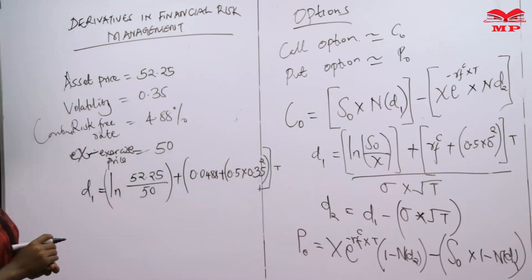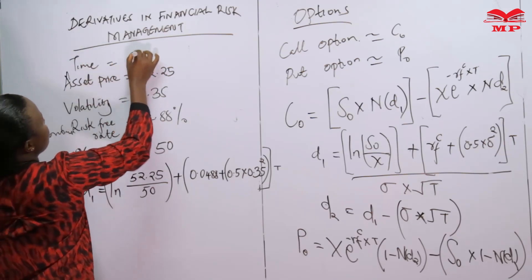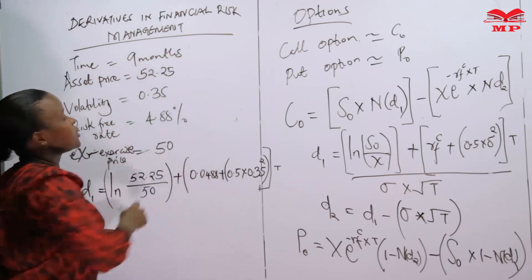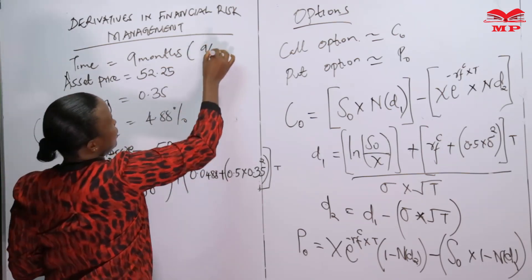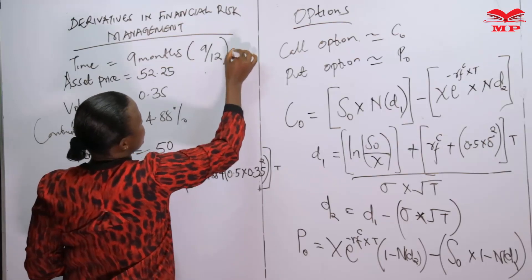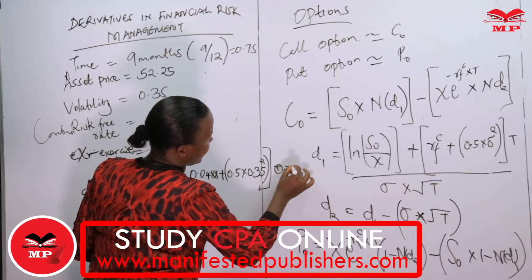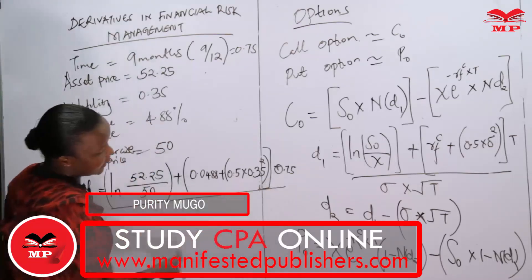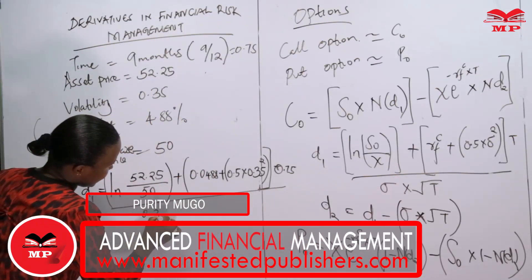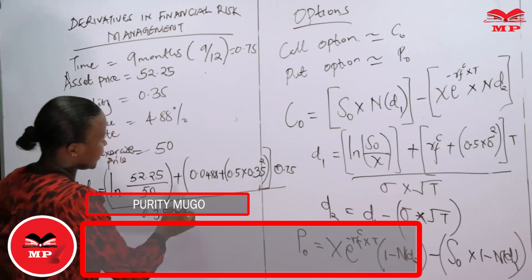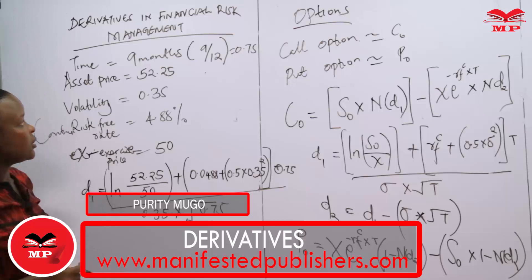Our time — according to our question the option expires in nine months. When given in months we convert to an annual rate: nine out of twelve months gives 0.75. So T equals 0.75. We then divide all of this by our sigma, which represents our volatility of 0.35, multiplied by the square root of time, which is the square root of 0.75.